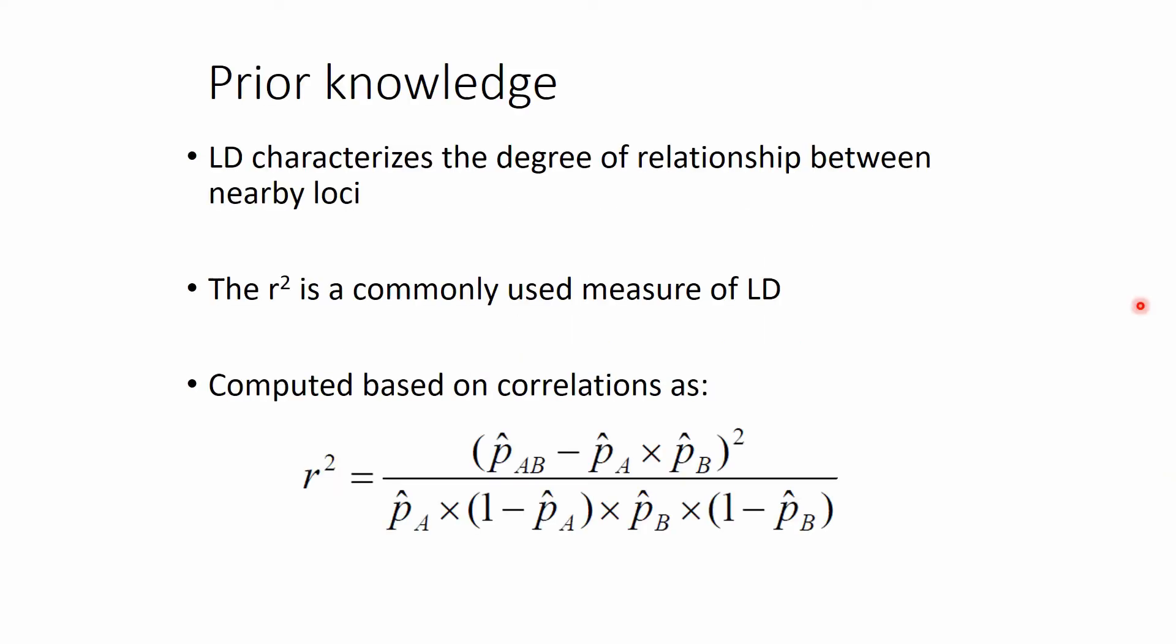So what we know so far: LD characterizes the degree of relationship between two loci as always, and R-square is the commonly used measure of the LD computed with the equation below.